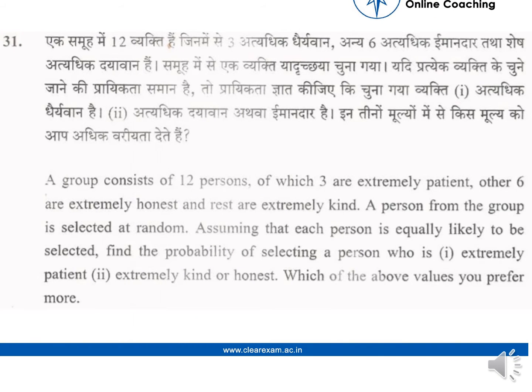A group consists of 12 persons, of which 3 are extremely patient, 6 are extremely honest, and the rest are extremely kind. A person from the group is selected at random, assuming each person is equally likely to be selected. Find the probability of selecting a person who is extremely patient (Case 1), and who is extremely kind or honest (Case 2).